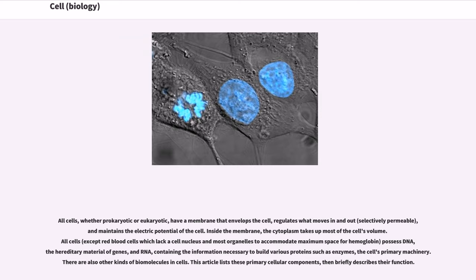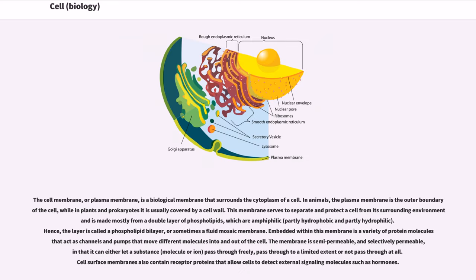The cell membrane, or plasma membrane, is a biological membrane that surrounds the cytoplasm of a cell. In animals, the plasma membrane is the outer boundary of the cell, while in plants and prokaryotes it is usually covered by a cell wall. This membrane serves to separate and protect a cell from its surrounding environment and is made mostly from a double layer of phospholipids, which are amphiphilic, partly hydrophobic and partly hydrophilic. Hence, the layer is called a phospholipid bilayer, or sometimes a fluid mosaic membrane.